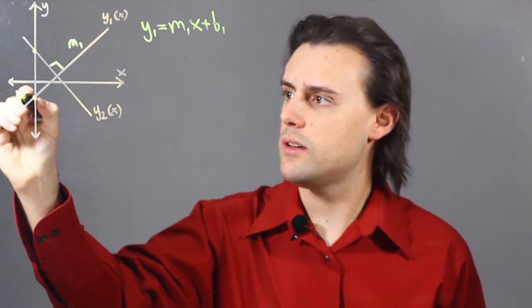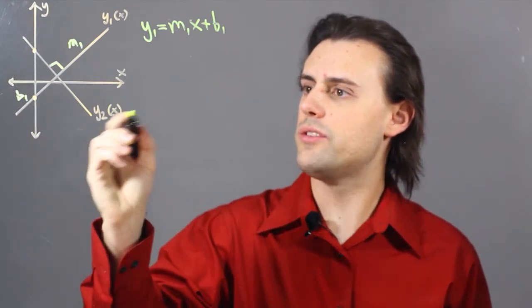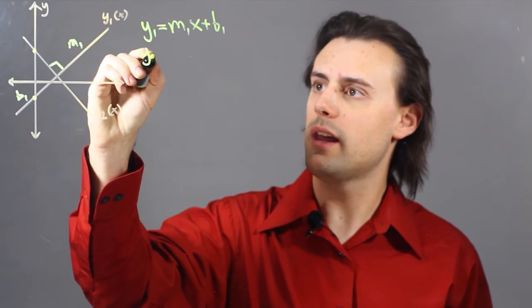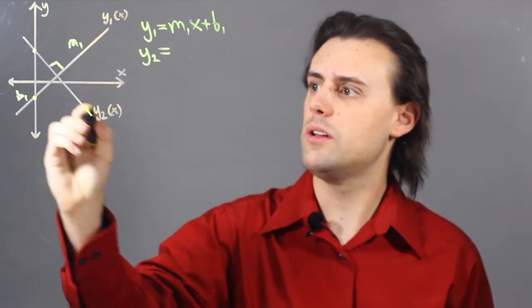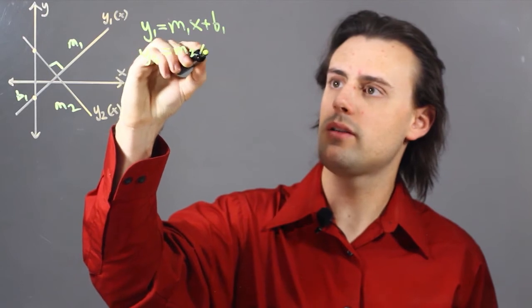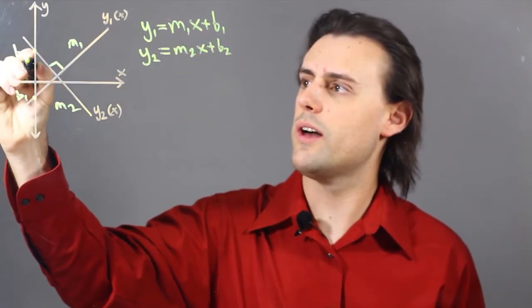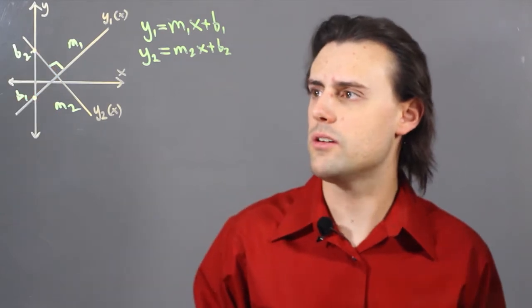And b1 is my y-intercept here, and for the second line, I'll likewise have y2 is equal to m2x plus b2, where b2 is the value of this particular y-intercept.